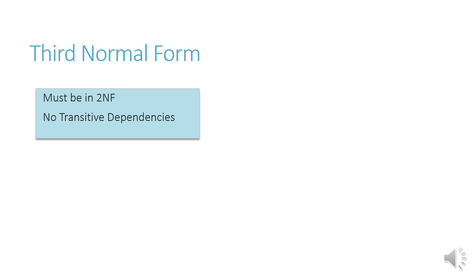To put a database into third normal form, the rules are: it must already be in second normal form, and there must be no transitive dependencies.